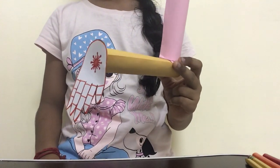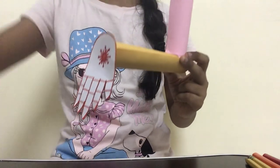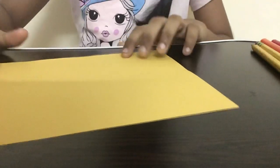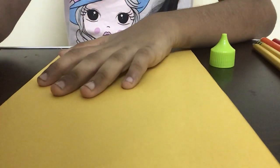So let's get started. First for this activity we need a rectangular piece of paper. The first step is that we have to take a glue bottle and apply some glue on the corner of the paper like this.